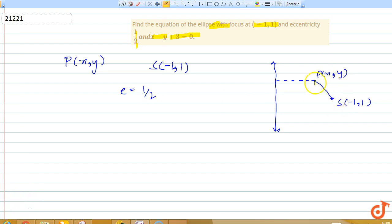The ellipse is the locus of all the points whose distance from a fixed point is equal to e times the distance from a fixed line, and this line equation we have given here x - y + 3 = 0.